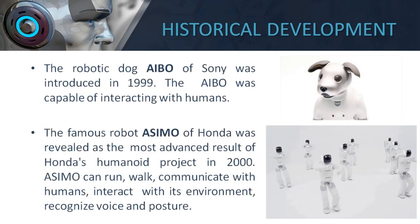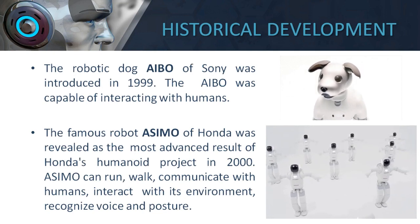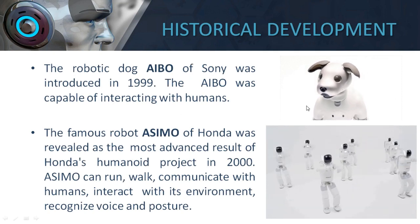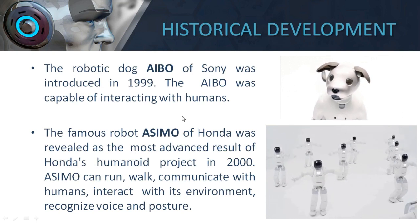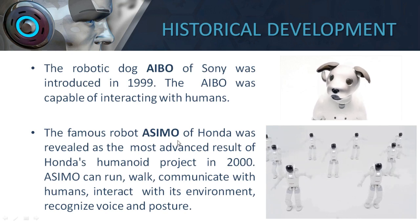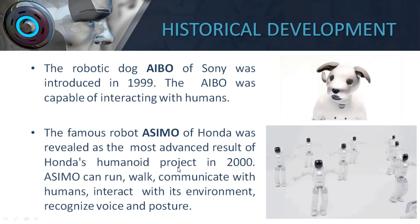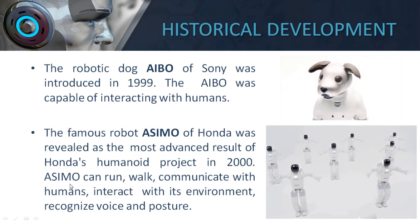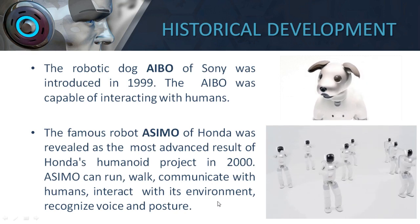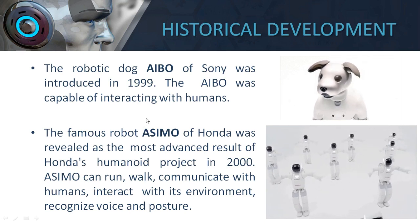Moving on, Sony in 1999 introduced a robotic dog called Aibo, which was capable of interacting with humans. Then in 2000, Japanese company Honda introduced a robot called Asimo — a humanoid robot released in 2000. The important features of Asimo were that it could run, walk, communicate with humans, interact with its environment, and recognize voice and the posture of human beings.